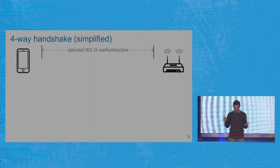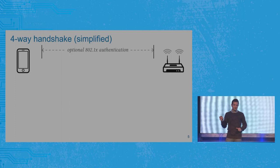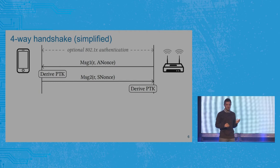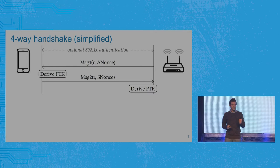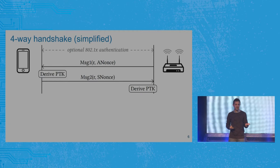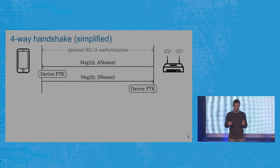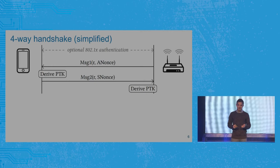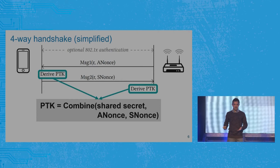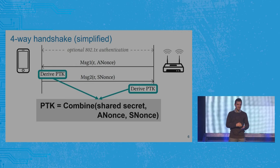As the name implies, the four-way handshake consists of four messages. The first two are used to transport a random number from the access point to the client and from the client to the access point. The first message is sent by the access point to the client and contains the so-called ANonce — access point nonce. In response, the client generates its own random number called the SNonce — supplicant nonce, where supplicant is just a synonym for client — and sends it to the access point. Once both endpoints have received these random numbers, they can generate the unique session key called the PTK. You take the shared secret, mix it with the two random numbers, and the output is the unique session key.